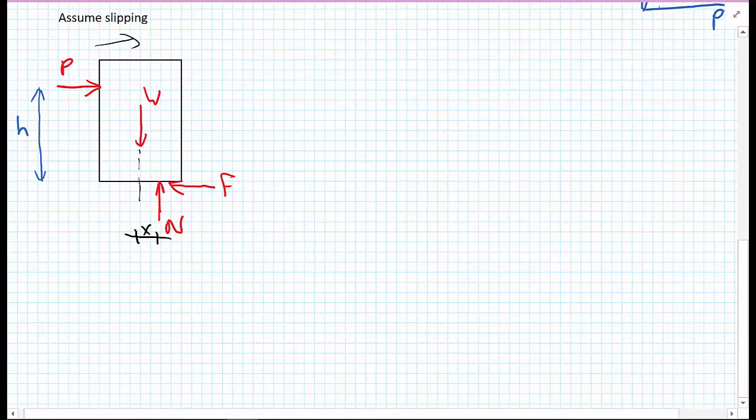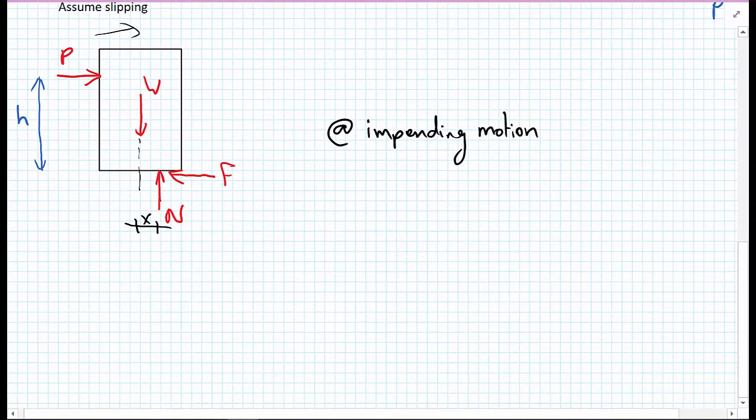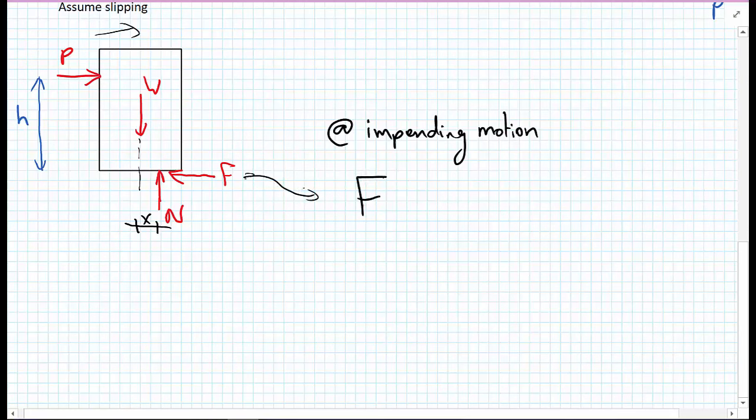Because we're considering slip at the point of impending motion, just as the box is about to slip, we will generate on our model of dry friction the absolute limit of friction available to us. So the friction force F on our free body diagram will be equal to F_s, which equals μ_s times the normal force N.